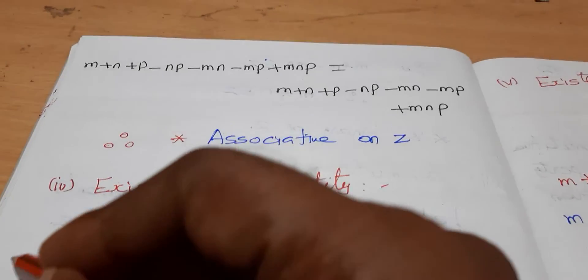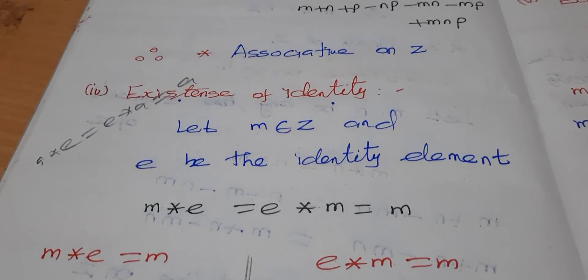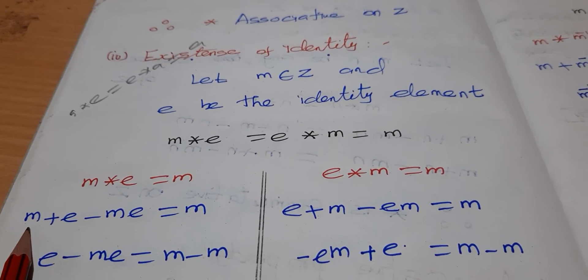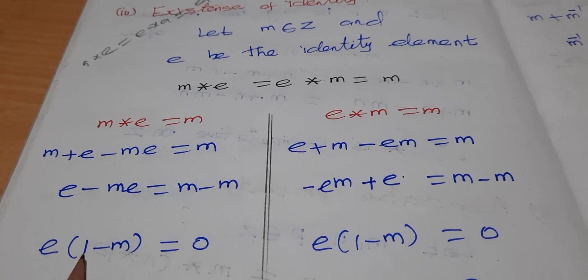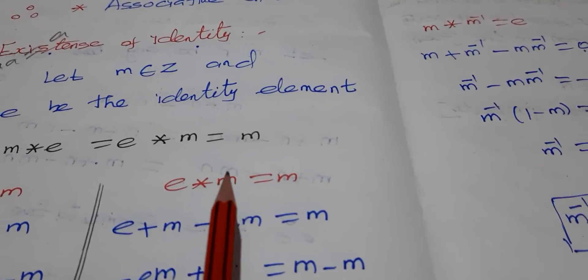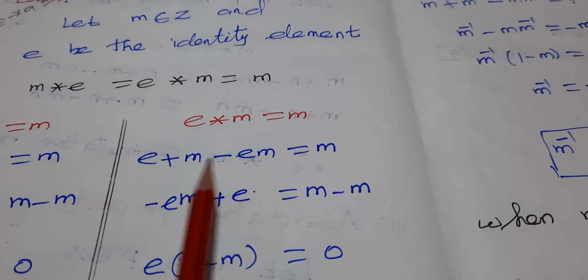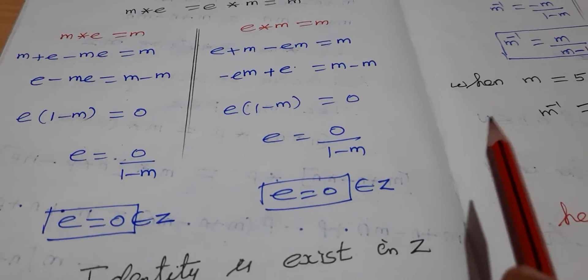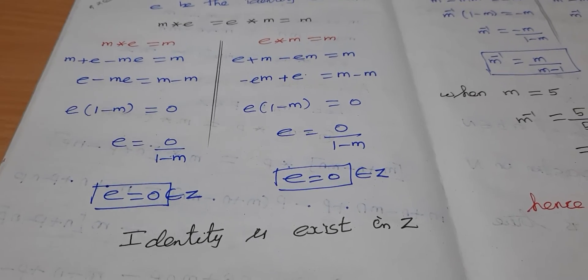Identity property: we need a star E equals E star a equals a. So m star E equals E star M equals M. Applying the operation: m plus E minus mE equals m. This gives E minus mE equals 0, so E(1 minus m) equals 0, which means E equals 0. The identity element is 0, which belongs to Z. So the identity property holds.